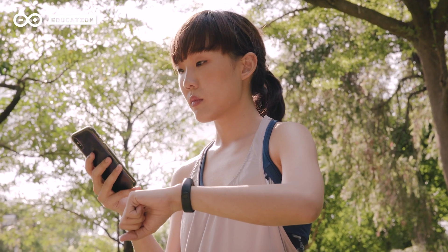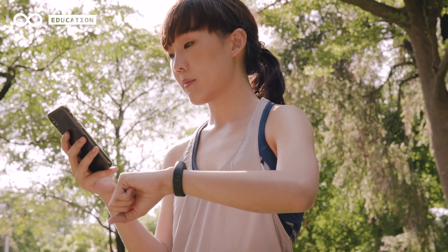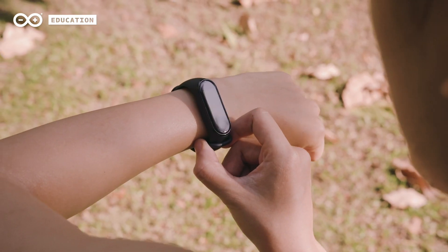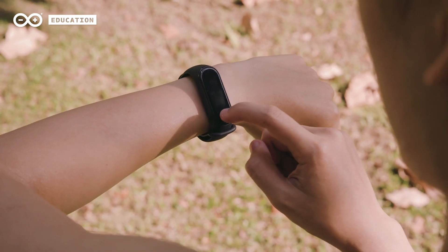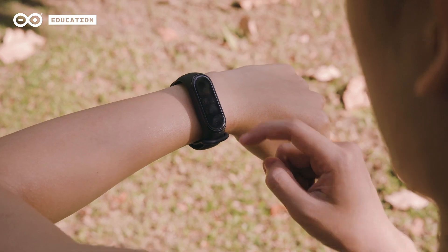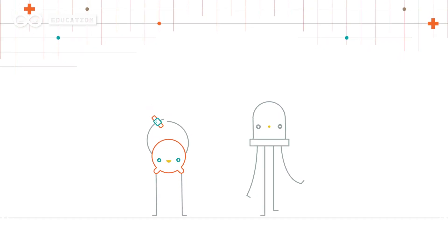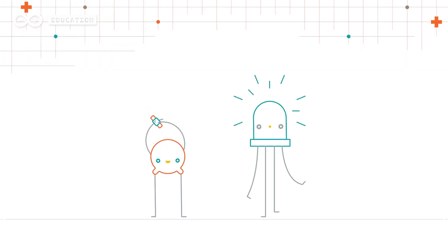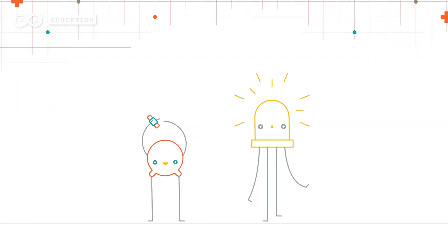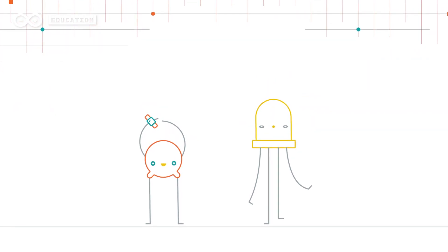By using embedded sensors, actuators and chips in the physical world that surrounds us to connect devices digitally, the Internet of Things allows us to transmit and gather valuable data and information that lets us better understand how society works and makes our work easier and better.